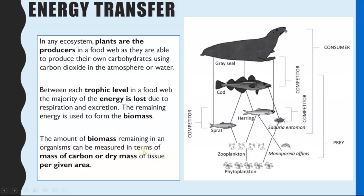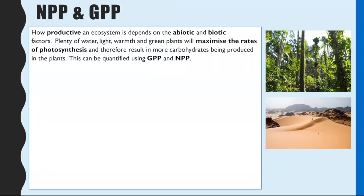The amount of biomass remaining in an organism can be measured in terms of the mass of carbon or the dry mass of tissue per given area. So sometimes you might get questions asking how you could work out the biomass of a plant — you'd need to remove all of the water to make sure it was just the dry mass. In that way you know you've got the mass of the carbon, and we do it per given area just so it's a fair comparison between different sized organisms.